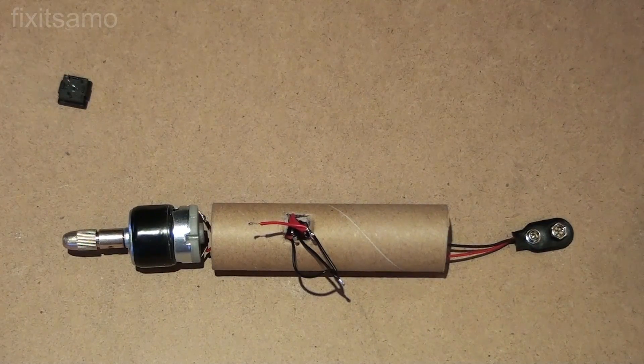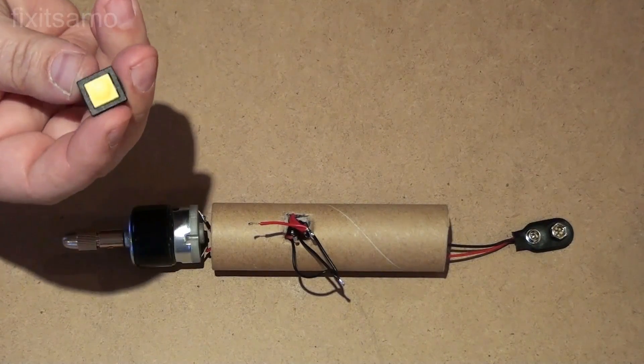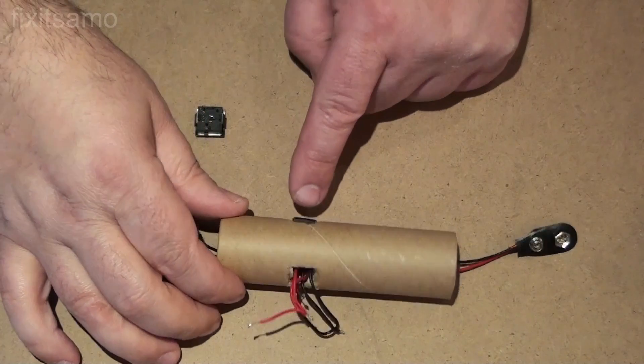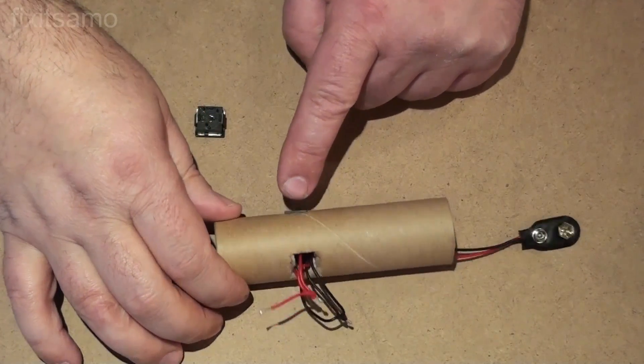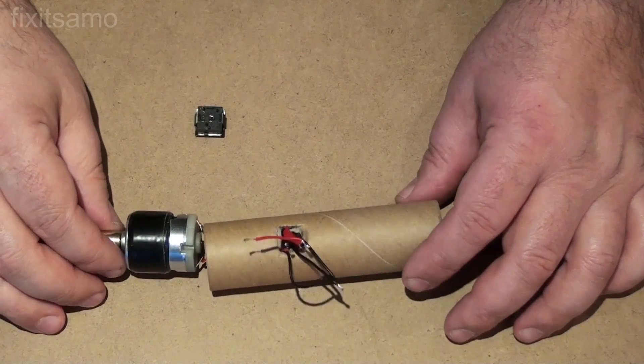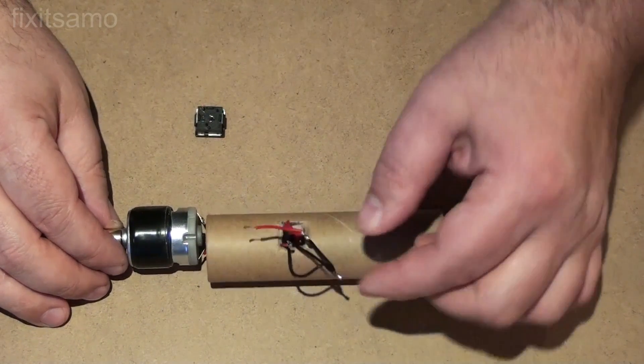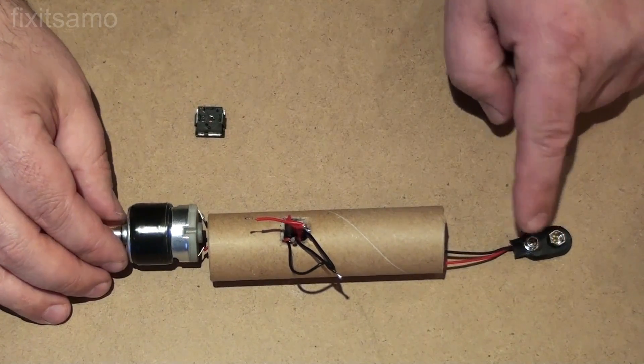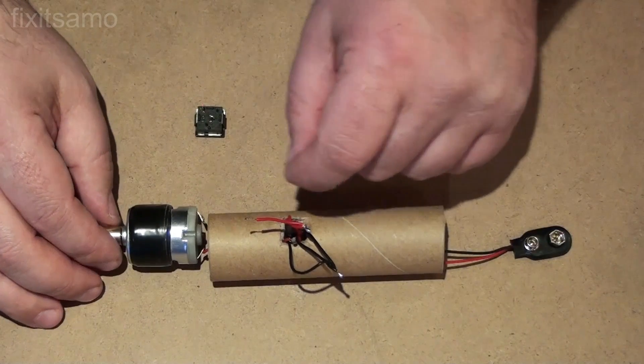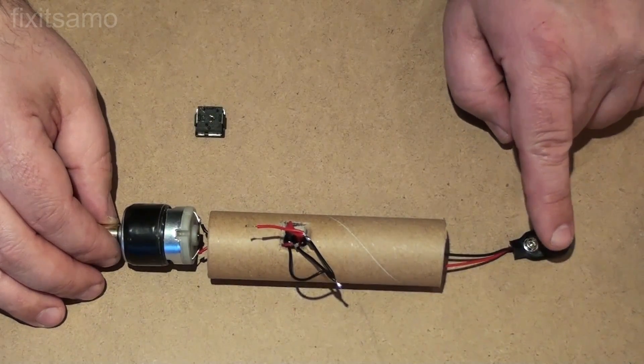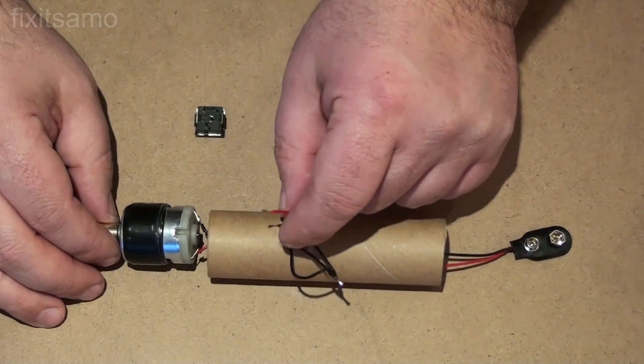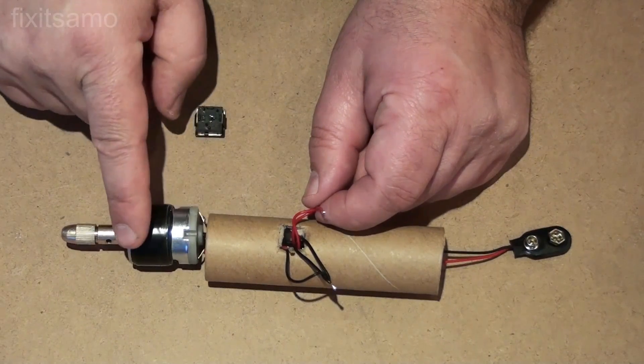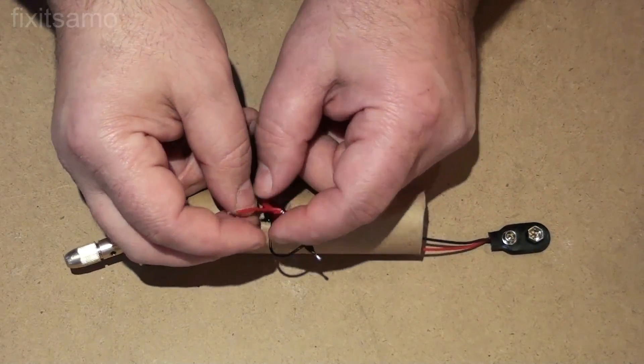Okay guys, so the final step for this project is to install our momentary switch. What I've done here, I've installed the wires from the 9 volt connection and the wires from the adapter connection, including the motor. What I've done here, I've put all the black wires together that comes from the motor, from the adapter connection, and from the 9 volt. And for the red wires, I've connected the 9 volt connection with the adapter. But the connection, the red connection that goes from here to the motor, that's where we're going to install our momentary switch.